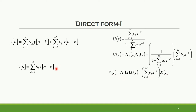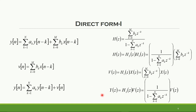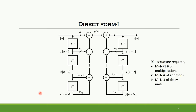Thus, by taking the inverse Z-transform, V of N can be expressed in terms of X of N minus K and BK coefficients. The total output in terms of Z-transform — V of Z multiplied with H2 of Z — gives Y of Z, which can once again be expressed in the time domain as a function of V of N and Y of N minus K terms. A Direct Form 1 structure thus requires a total of N plus N plus 1 multipliers, N plus N adder terms, and N plus N delay units.